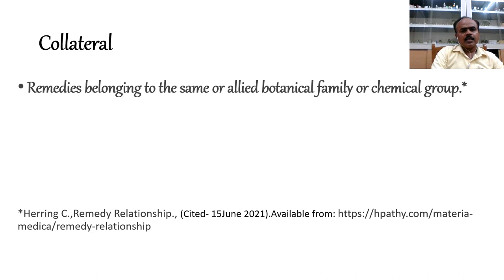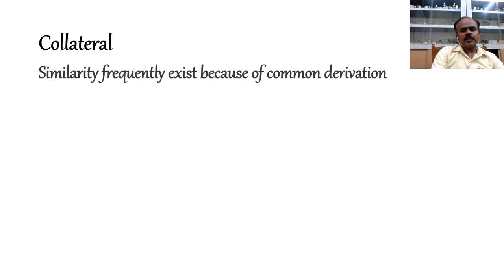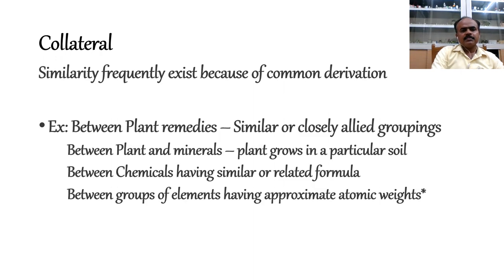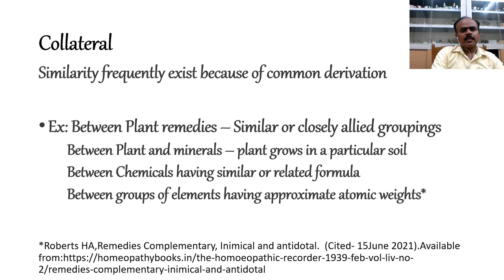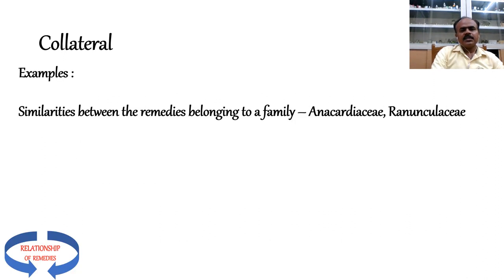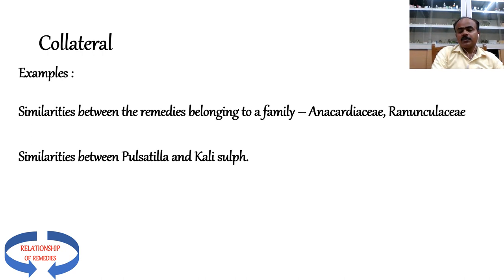Examples of collateral relationships include similarities between remedies belonging to Anacardiaceae and Ranunculaceae families, similarities between Pulsatilla and Kali Sulph because Pulsatilla grows in soil rich in potassium sulphate, and similarities among halogens. Earlier practitioners opined on the relationship of remedies: Dr. Elisabeth Wright advises that after repertorization, when more than one remedy appears, one should take help of Gibbs and Miller tables found in the relationship of remedies section at the end of Boericke's Materia Medica.